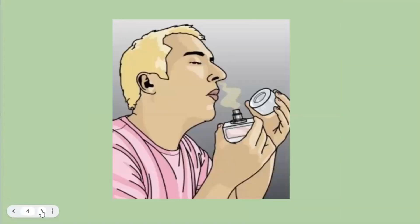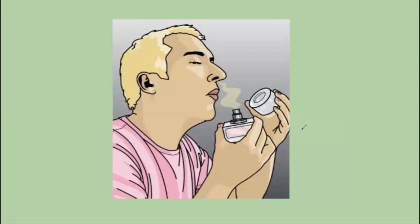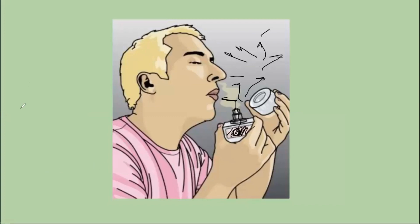Another example of diffusion is an air freshener, deodorant, or spray. When you open the bottle and spray, you can feel the smell. Inside the bottle of perfume is the high concentration area. When you spray, the molecules come out from the area of higher concentration and start spreading into the area of lower concentration, eventually hitting the receptor cells inside the nose so we can smell them.